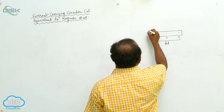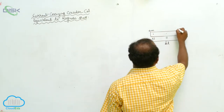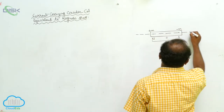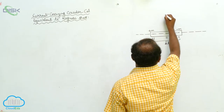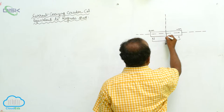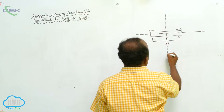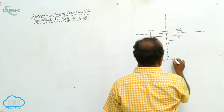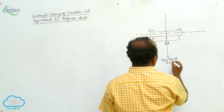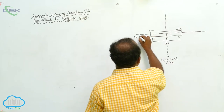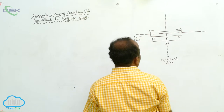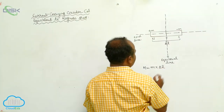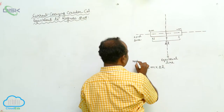The pole strength is plus M and pole strength is minus M. This line is called the axial line of the bar magnet. This is called the perpendicular bisector, also known as the equatorial line.